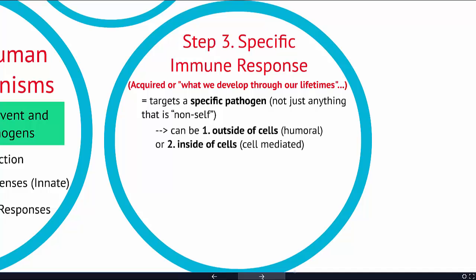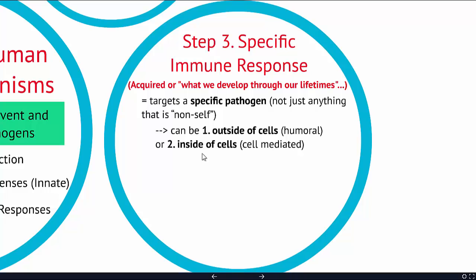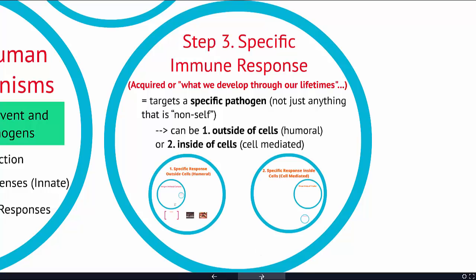There are two kinds of specific immune response. It can be humoral, which means outside of cells, or cell-mediated, which is inside of cells. The pathogen could be around your tissues or in your circulatory system, or it could be inside the cell. Viruses tend to be more inside the cell, while bacteria or fungi might be more outside the cell.